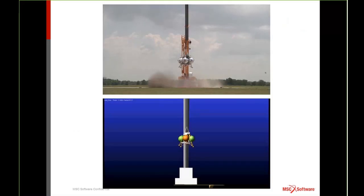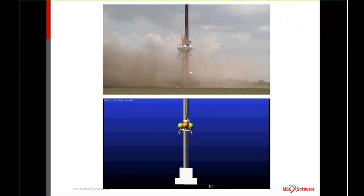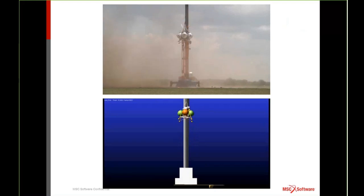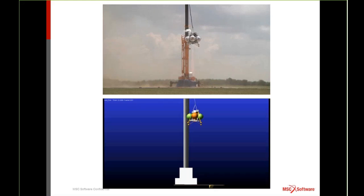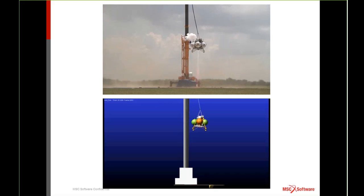So without further ado, here's that tether test. As you can see, we suspend the vehicle underneath the crane, light the engine, and have it go through its intended flight trajectory. Obviously we're limited to what kind of trajectories we can do while suspended by the crane. But this shows how even though the motion is somewhat limited, we're still taking telemetry data, which we are then able to play back in the ADAMS simulation, which you see on the bottom there.